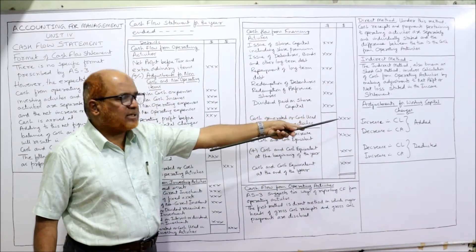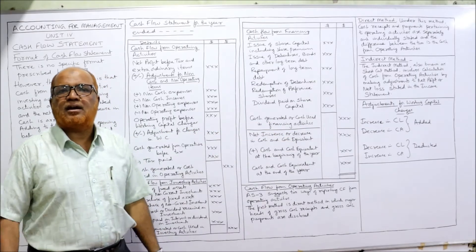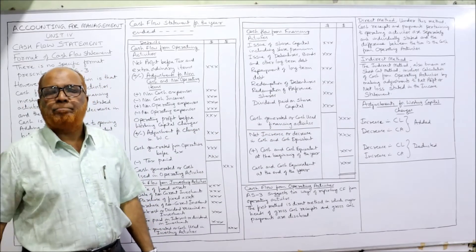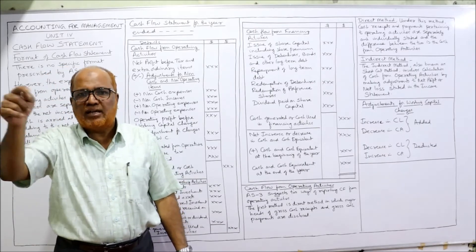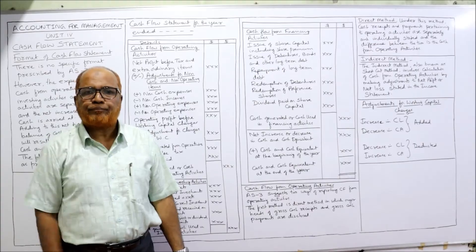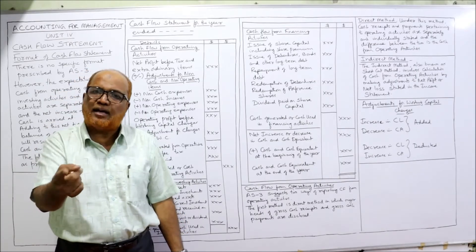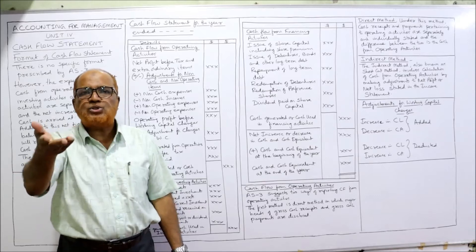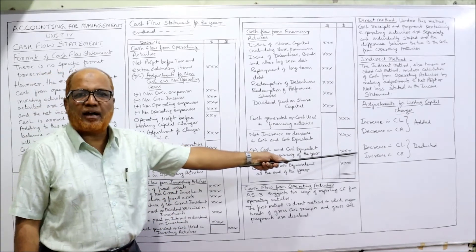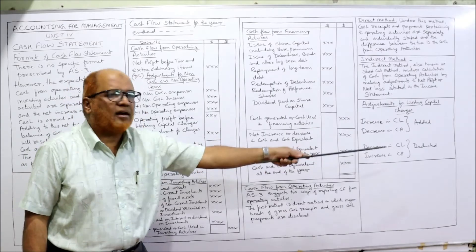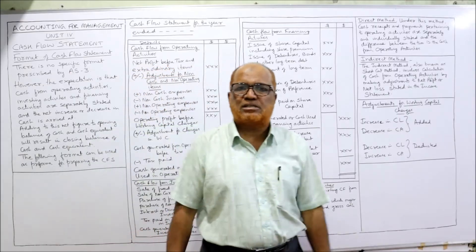For adjustment for working capital changes: an increase in current liability or a decrease in current assets should be added. If the current liability increased during the current year, add it. If current assets decreased during the current year, add it. The opposite should be deducted — that is, a decrease in current liability or an increase in current assets should be deducted. Remember this rule for working capital changes.